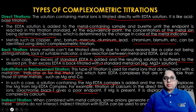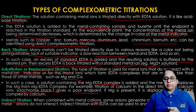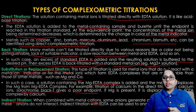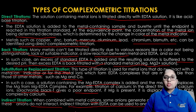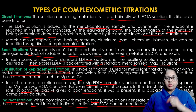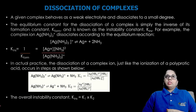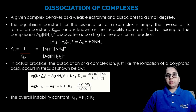(4) Indirect titration — when combined with metal cations, some anions generate a precipitate. These anions do not interact with EDTA, so indirect EDTA titrations can be used to analyze them. These are the four types of titrations that can be performed for different metal ions.